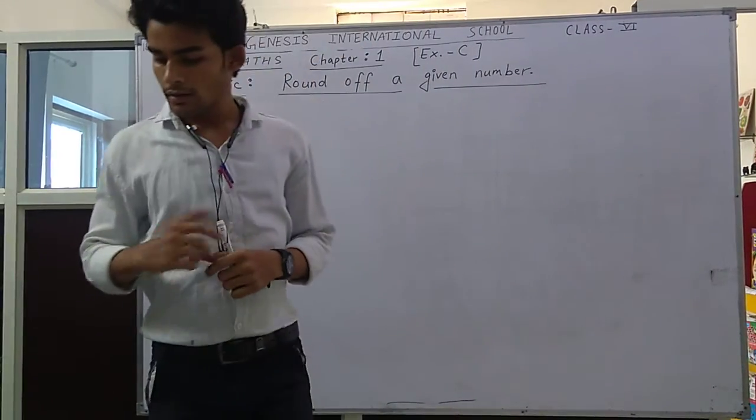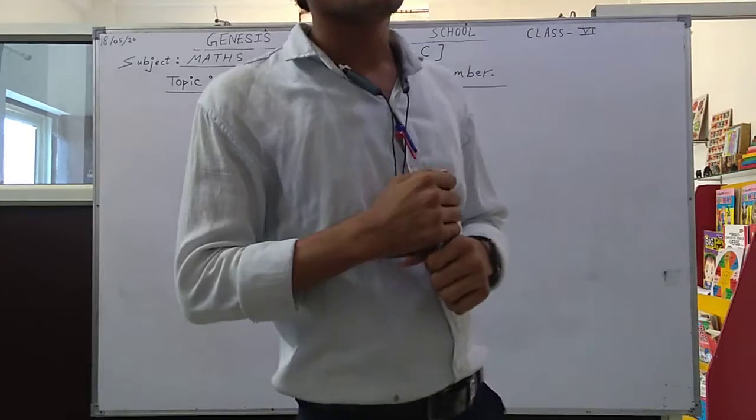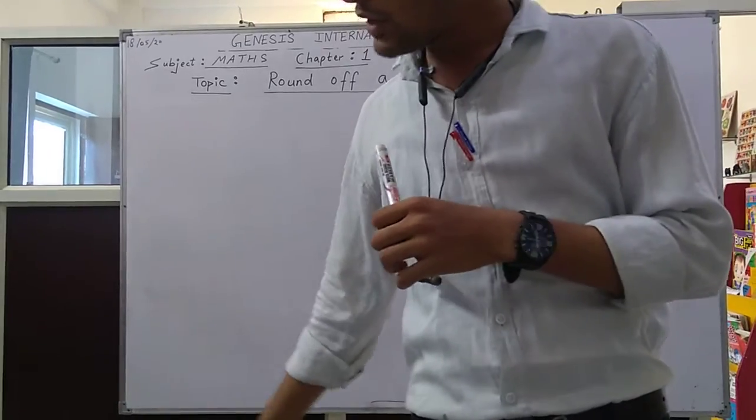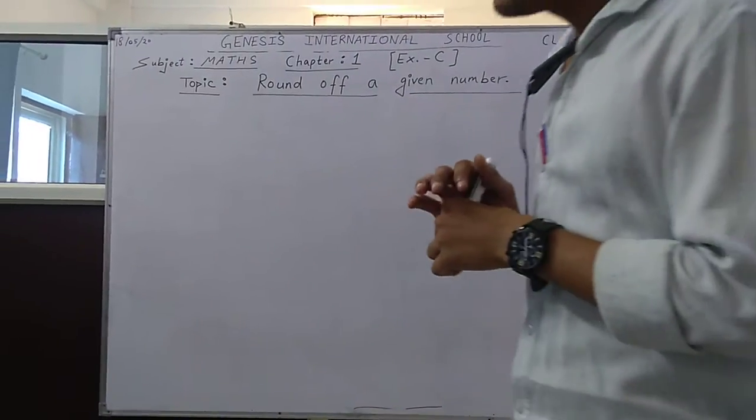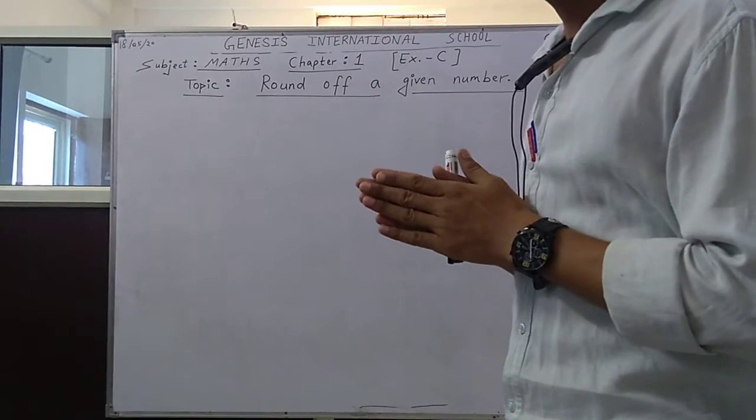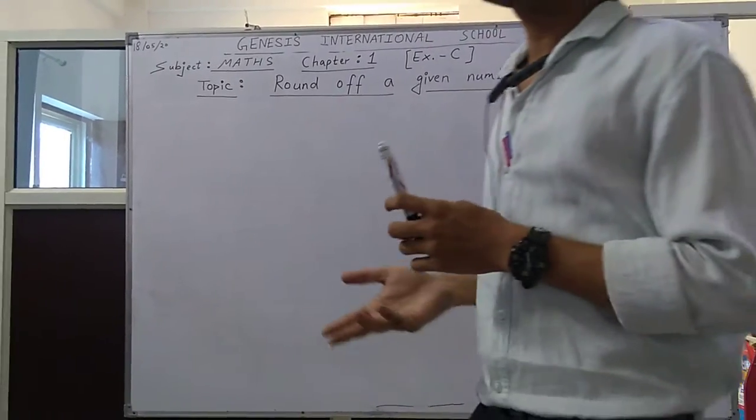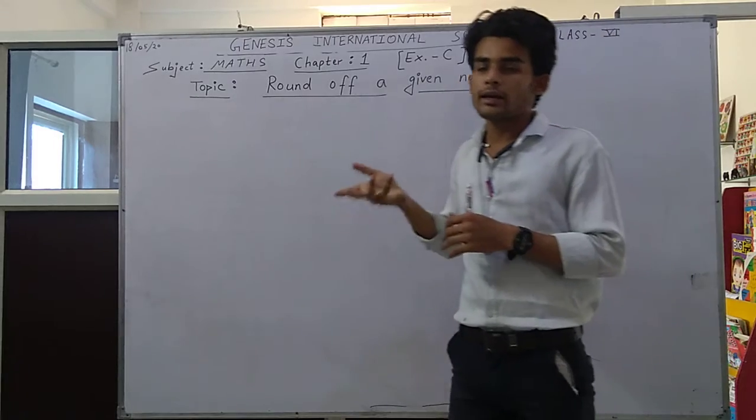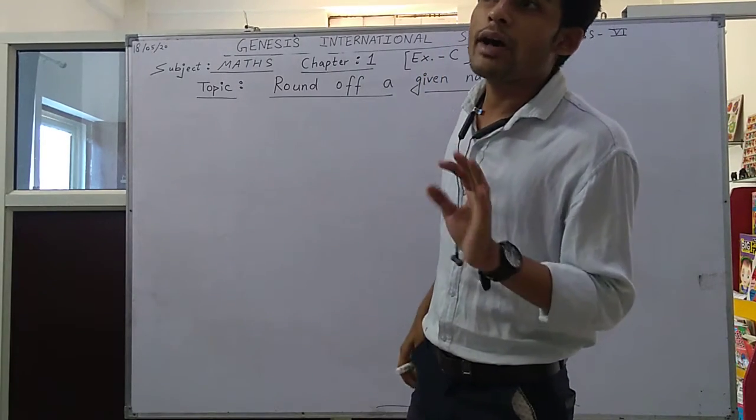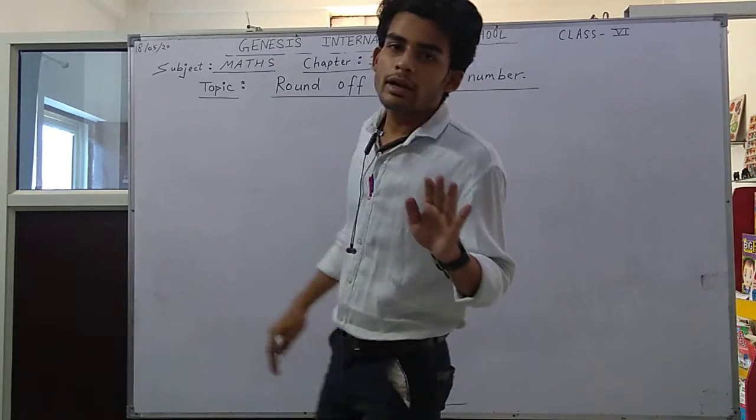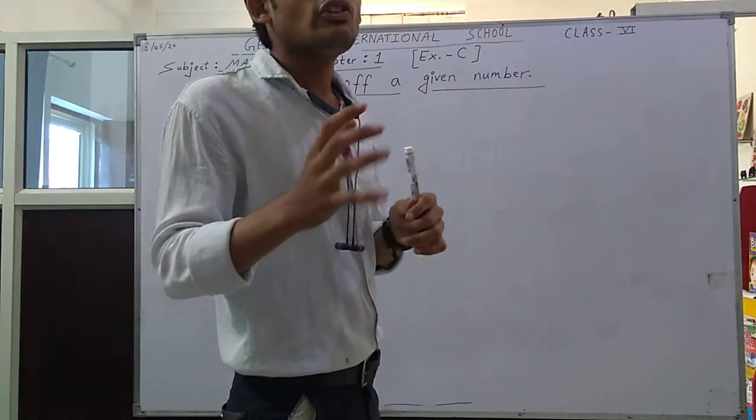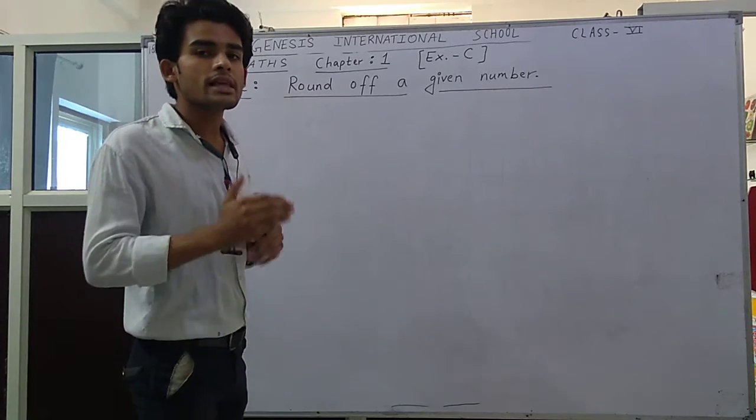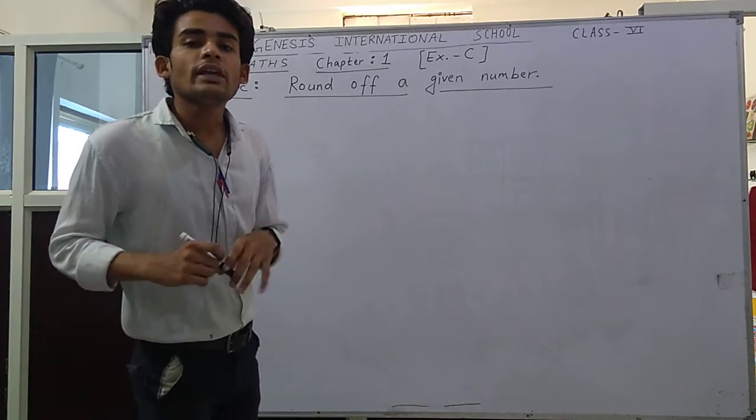Good morning students, today in chapter 1st, exercise C given on page number 11, we will learn about the topic rounding of a given number. The topic is rounding of a given number.